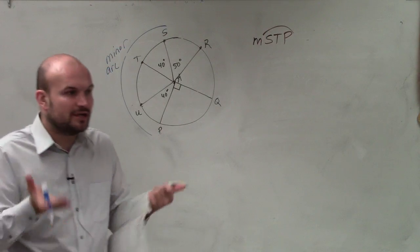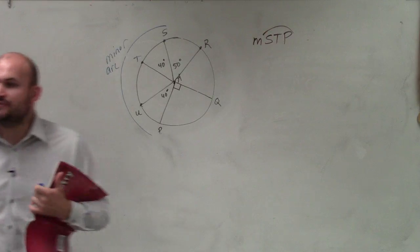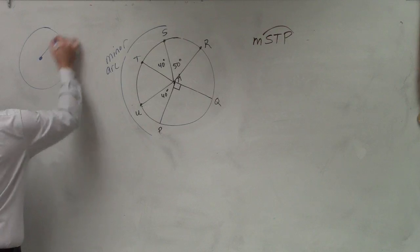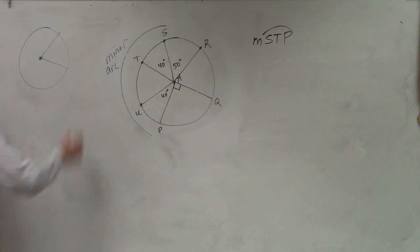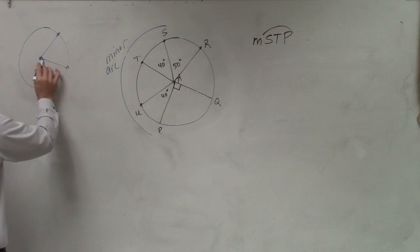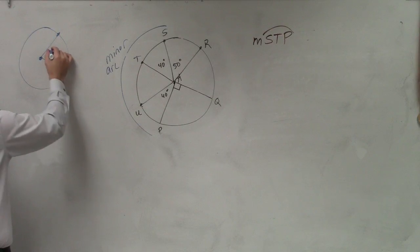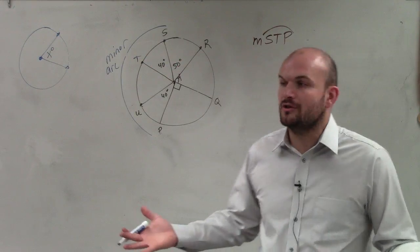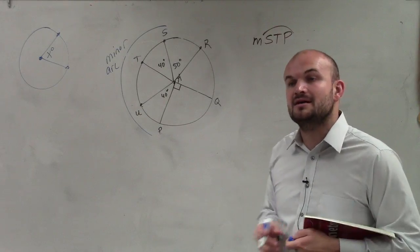Now remember, the minor arc is the measure of the central angle. If you guys remember, a central angle is an angle that has a center at the vertex and then two endpoints on the circle. That is called your central angle, which has a measurement of x.